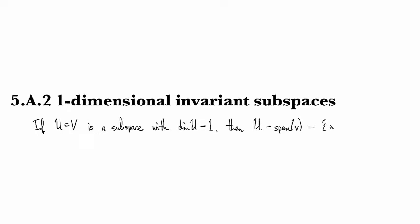In other words, it looks like all scalar multiples of v, as lambda runs through the base field.